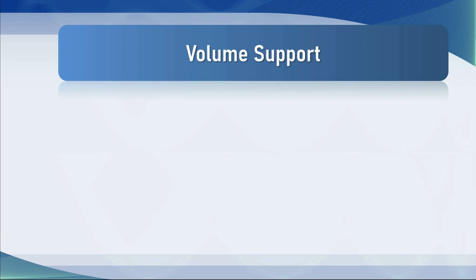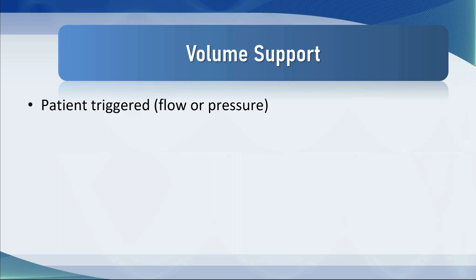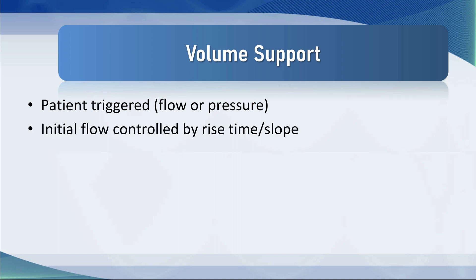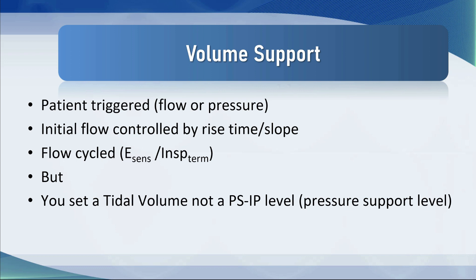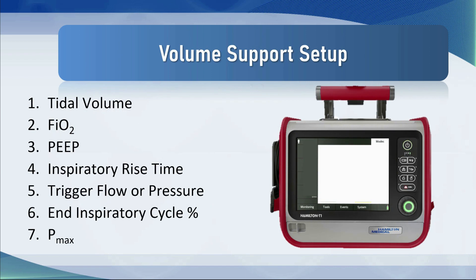Let's look at some of the key components of volume support. First, it's patient triggered — you'll use flow-by triggering or pressure triggering. The initial flow is controlled by the rise time or slope, just like pressure support. It's flow cycled using expiratory sensitivity, but you set a tidal volume, not a pressure support inspiratory pressure level. The pressure support is variable and determined by the ventilator — it's a closed loop system. When setting up the ventilator you set a tidal volume, an FiO2, a PEEP, a rise time, trigger flow or pressure, an end-inspiratory cycle percentage, and a Pmax.